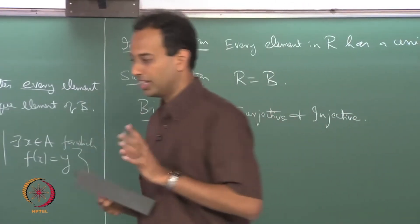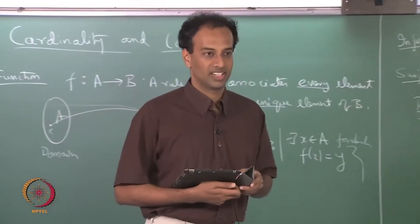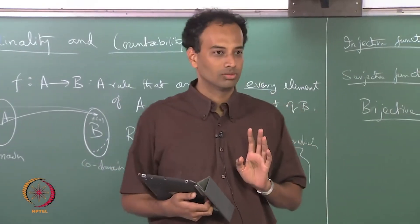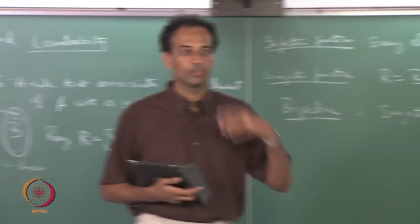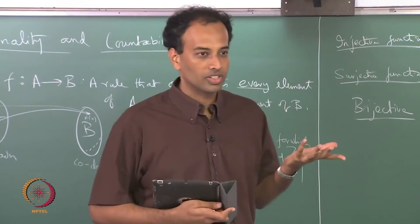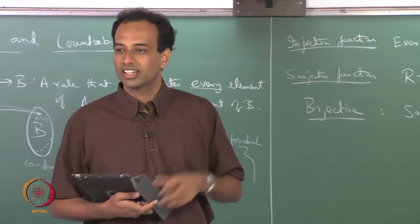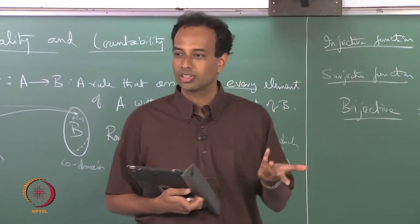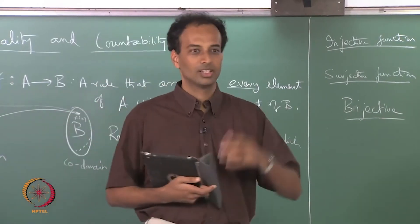This counting approach is fine as long as the sets are finite. But if you go on to infinite sets, this approach breaks down. If given two infinite sets, they are both infinite — how do you say one is bigger than the other? For example, natural numbers and rational numbers are both infinite sets, and you cannot easily compare them with this approach.